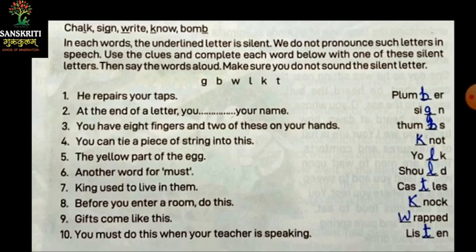Next: King used to live in them. King kiske use karte hai? Usmein rehne ke liye — castle. To usmein kya silent hai? T. Next: before you enter a room, do this. Aap jab room mein enter hone ke pehle kya karte ho? Knock. Knock mein kya silent hai? K silent hai.